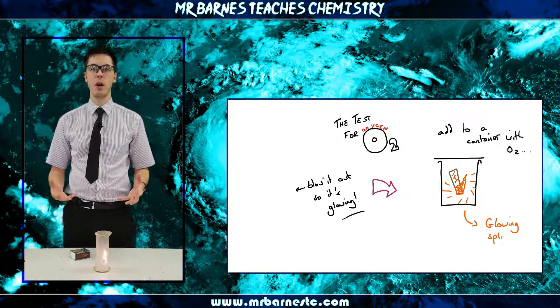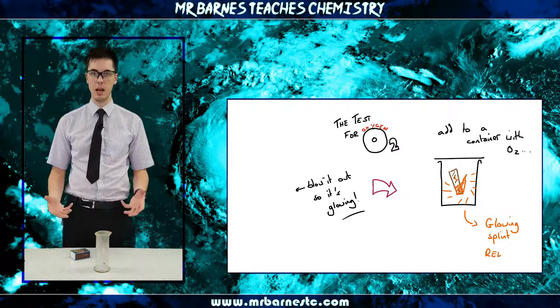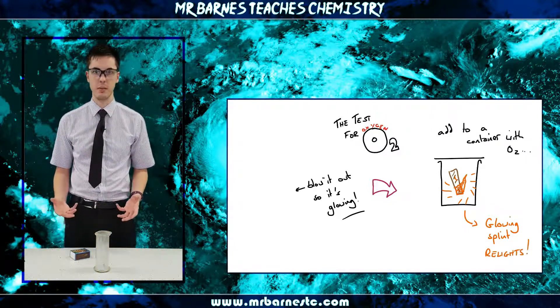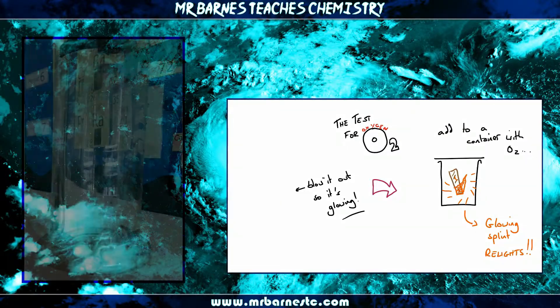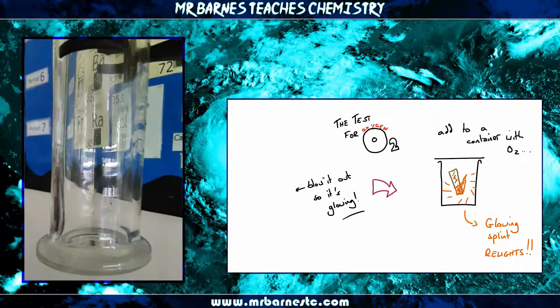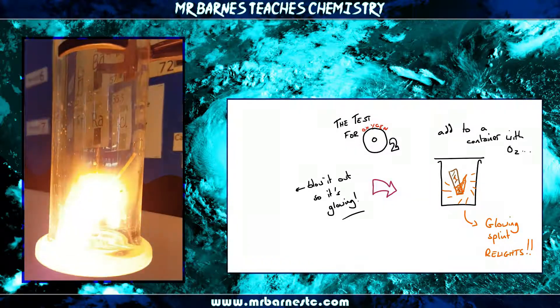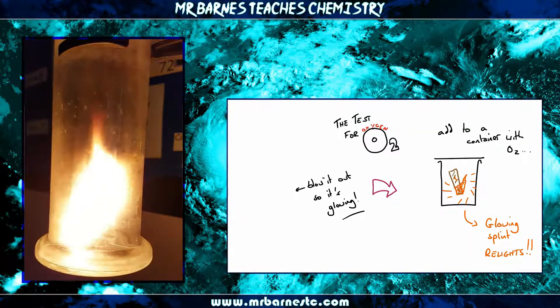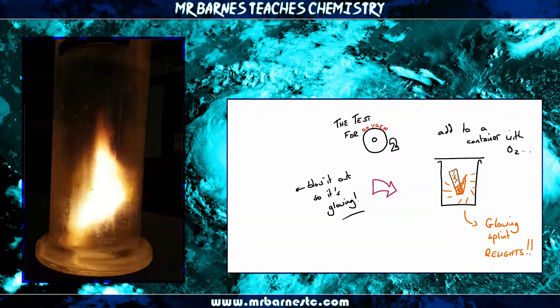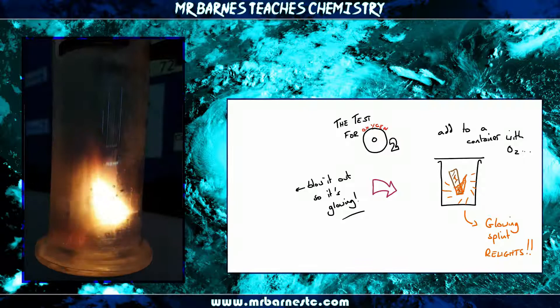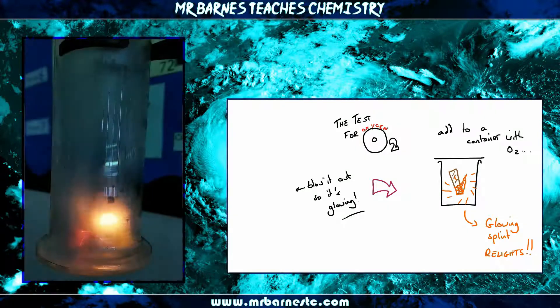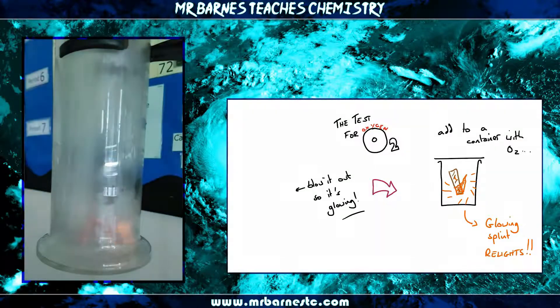So your test for oxygen is it relights the glowing splint. If I just show you a close-up version as a summary — you take your glowing splint, you add it into oxygen, and if oxygen is present it will relight, as you can see here.